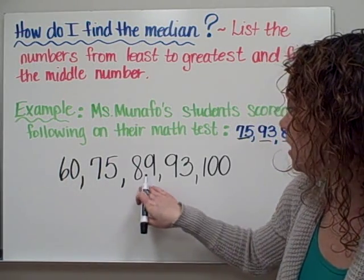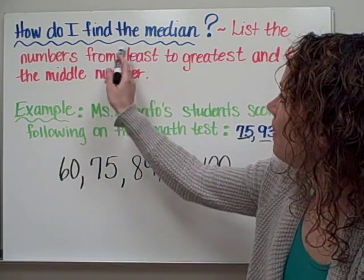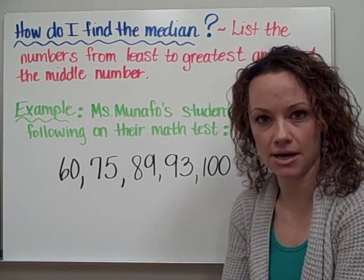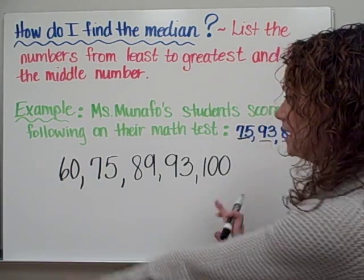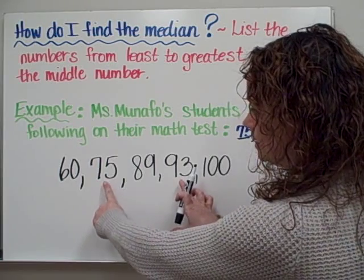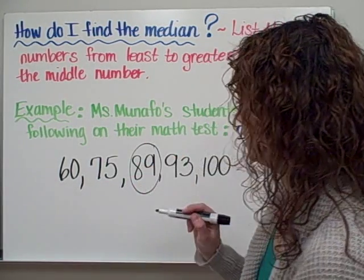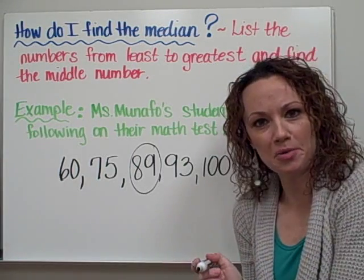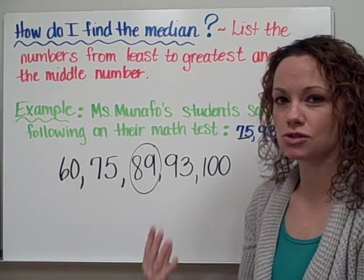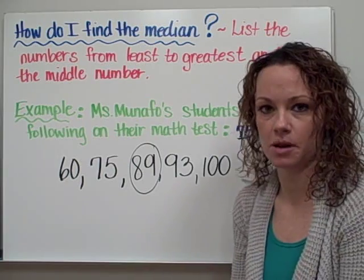Alright, so I have my list of numbers from least to greatest — I've done step one of finding the median. My next step is I need to search for the middle number. If we take a look starting at the outside and match one to one, you see when you work your way in that 89 is the middle number. So therefore we can say that 89 is the median score for this set of data.